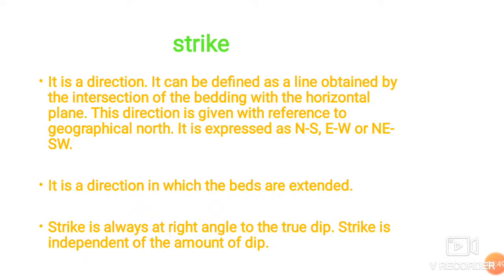When the bed is not horizontal and makes some angle with the horizontal plane, we have to determine its attitude — meaning its dip and strike. Strike is a direction. It is defined as the line obtained by the intersection of the bedding with the horizontal plane. When the inclined beds intersect with the horizontal plane, a certain line forms; this line is called the strike of that particular bed. As it is a direction, it is always given with reference to geographical north.